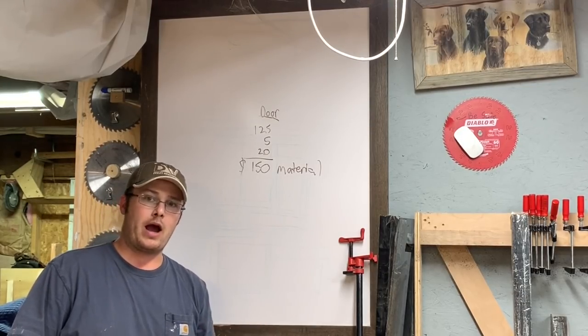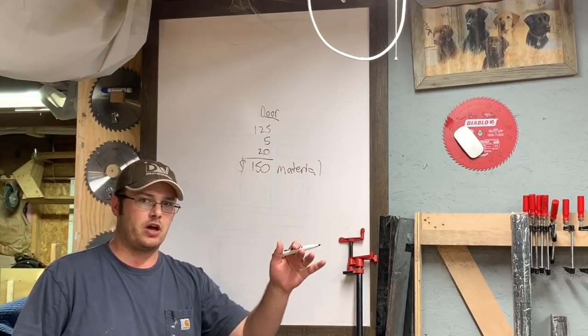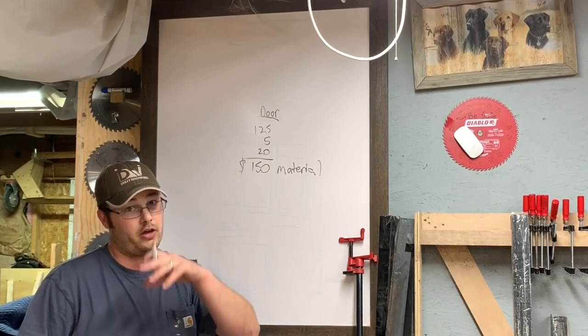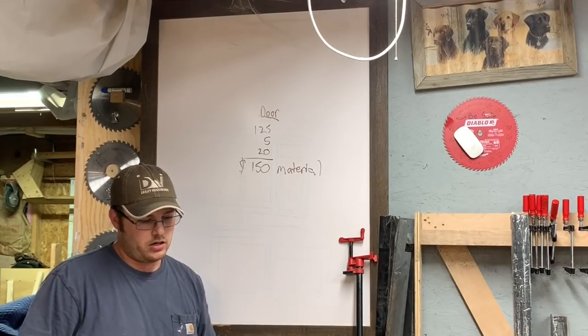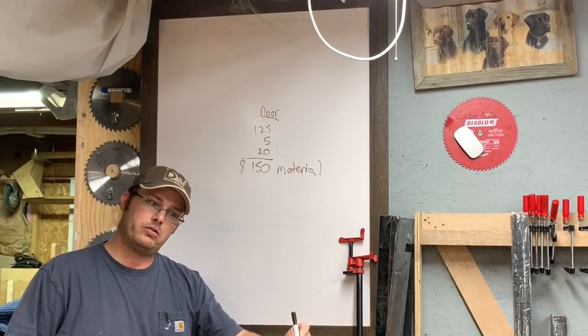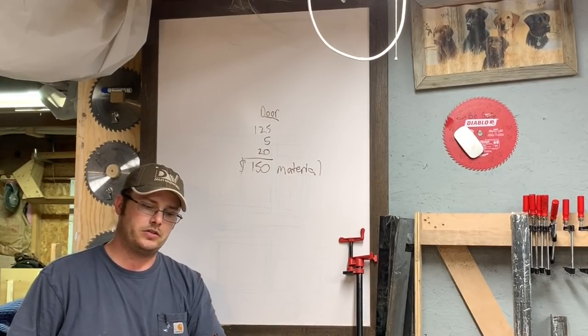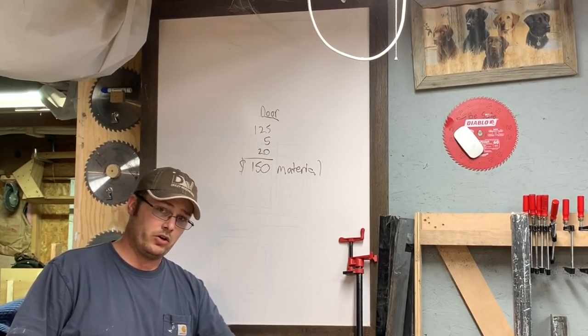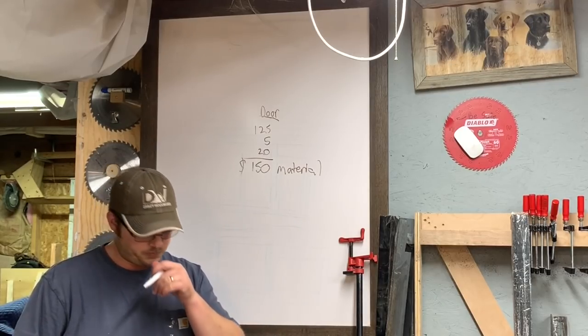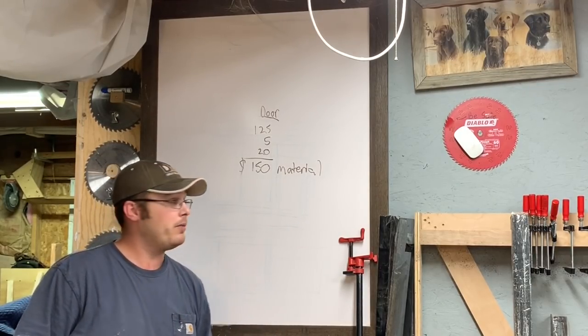Now we have labor. How long does it take to install an exterior door? About four hours, right? If all you're doing is installing the door. From picking up the door at Home Depot, getting to the customer's house, uninstalling the old one, putting the new one in, at minimum like half a day, right?